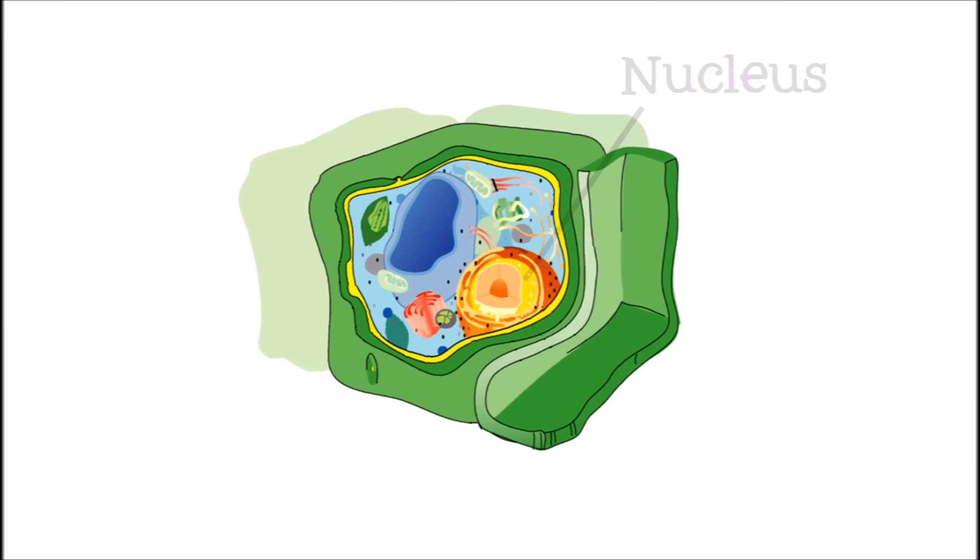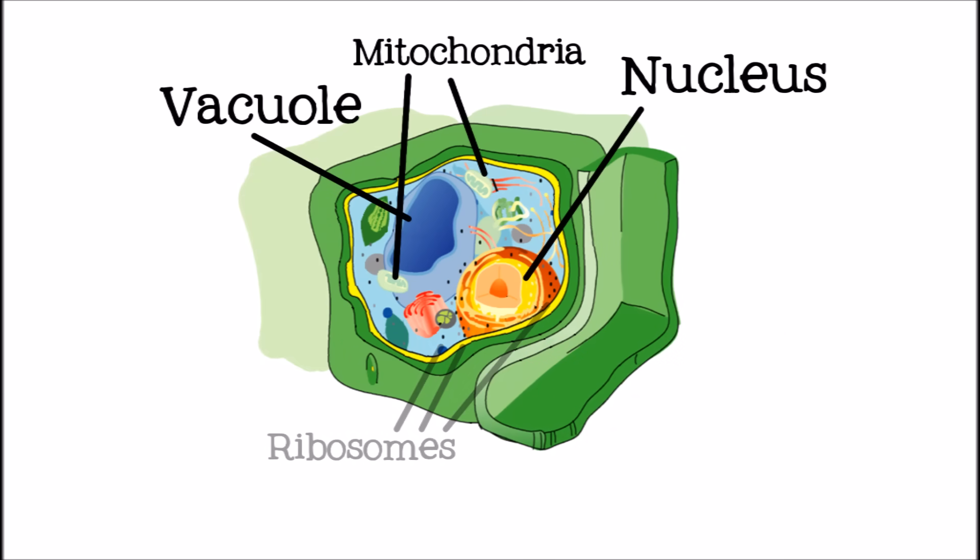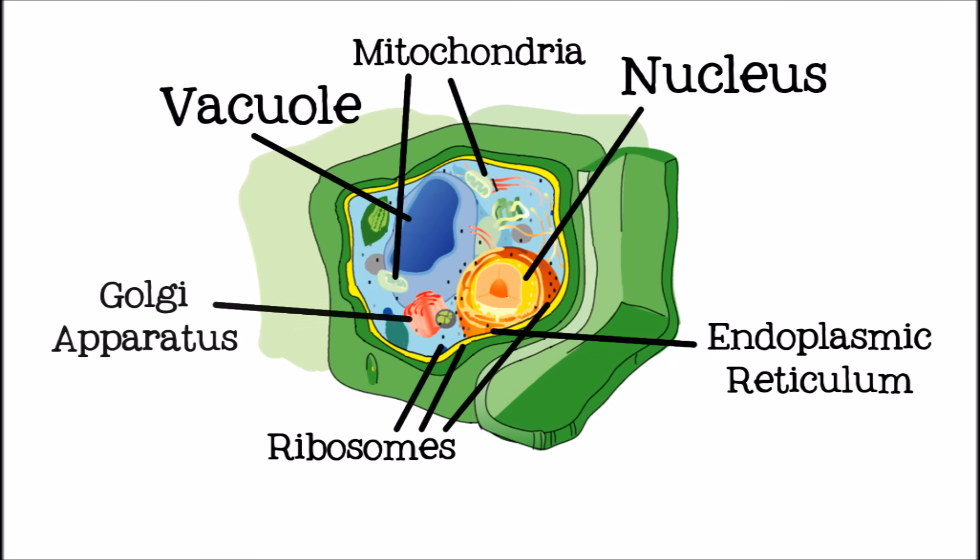Major organelles of a cell include the nucleus, vacuole, mitochondria, ribosomes, endoplasmic reticulum, Golgi apparatus, and, only in plant cells, chloroplast.